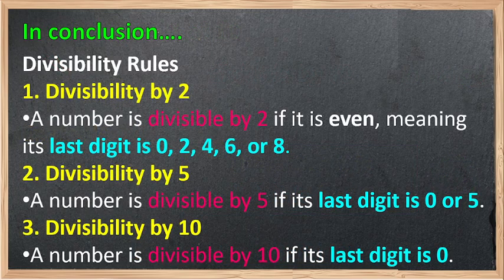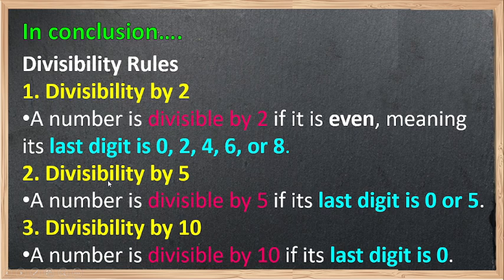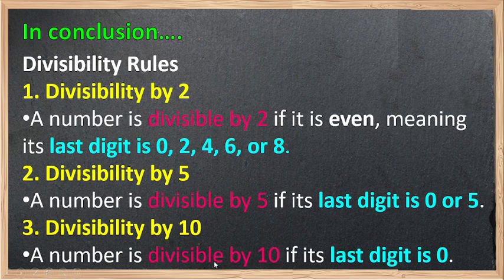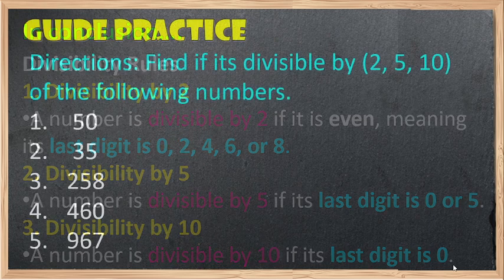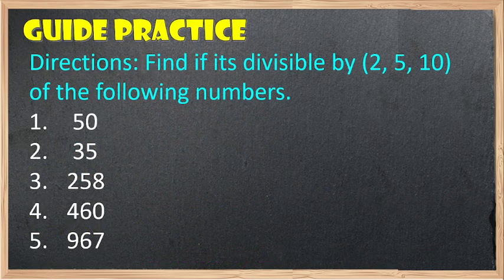In conclusion, the divisibility rules of 2, 5, and 10: a number is divisible by 2 if it's even, meaning the last digit is 0, 2, 4, 6, or 8. A number is divisible by 5 if the last digit is 0 or 5. A number is divisible by 10 if the last digit is 0. Now for our guided practice — find if each number is divisible by 2, 5, and 10.